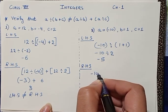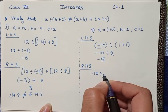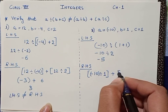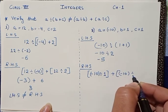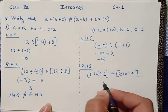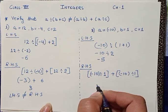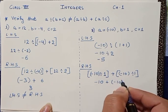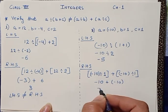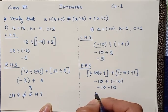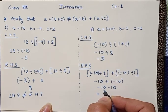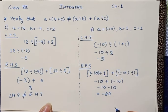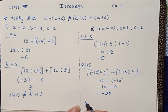Coming to RHS, we have [(-10)÷1] + [(-10)÷1]. Solving these two, we have minus 10 plus minus 10. These two numbers give us minus 10 and minus 10, and on solving we will take the addition of the two numbers, which is 20, and the sign will be negative.